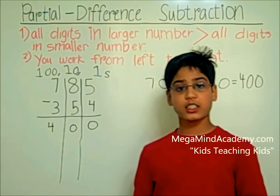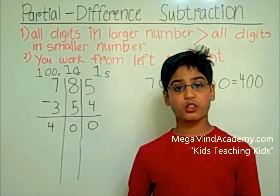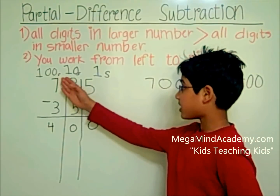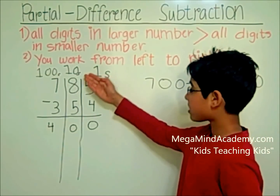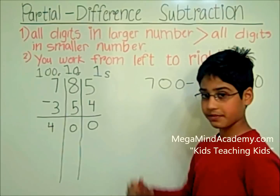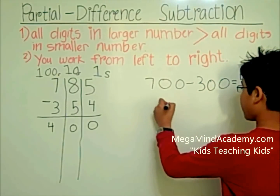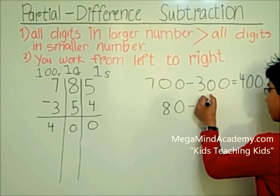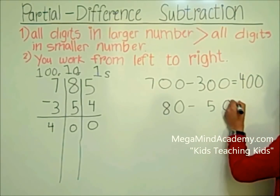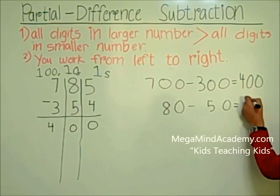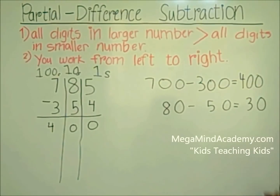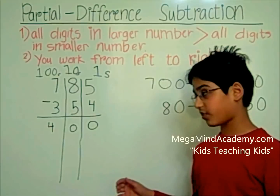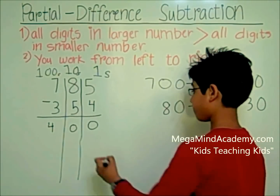Now let's go on to the place value to the right of the hundreds place — that is the tens place. 8 tens minus 5 tens is 80 minus 50, which equals 30. Let's write down this partial difference: 30.